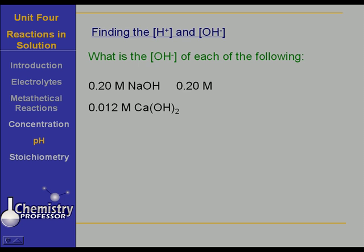A 0.012 molar calcium hydroxide, unlike sulfuric acid, is going to give us a 0.024 molar hydroxide ion. It might not be quite 0.024, but calcium hydroxide is a fairly strong base, so for our purposes at this point we will deal with it like this. If we have a 0.5 molar potassium hydroxide solution, that is also a strong base, and we will have a 0.5 molar hydroxide ion concentration.